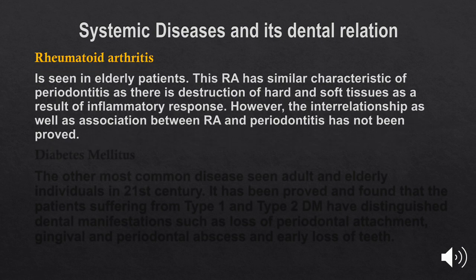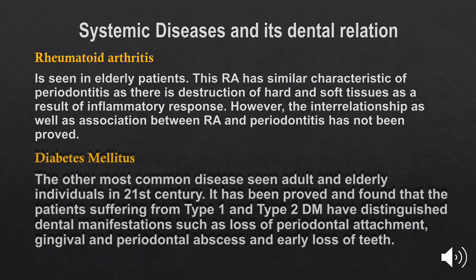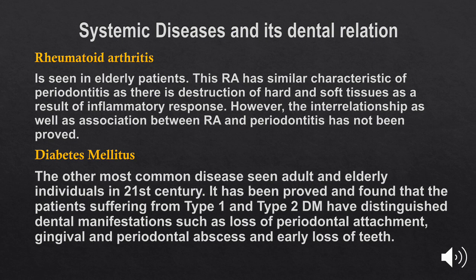Rheumatoid arthritis is seen in elderly patients and has similar characteristics to periodontitis, as there is destruction of hard and soft tissue as a result of inflammatory response; however, the interrelationship and association between rheumatoid arthritis and periodontitis has not been fully proven. Diabetes mellitus is another most common disease seen in adults and elderly individuals in the 21st century. It has been found that patients with type 1 and type 2 diabetes mellitus have distinct dental manifestations such as loss of periodontal attachment, gingival and periodontal abscess, and early loss of teeth. This is the end of part one of the lecture.